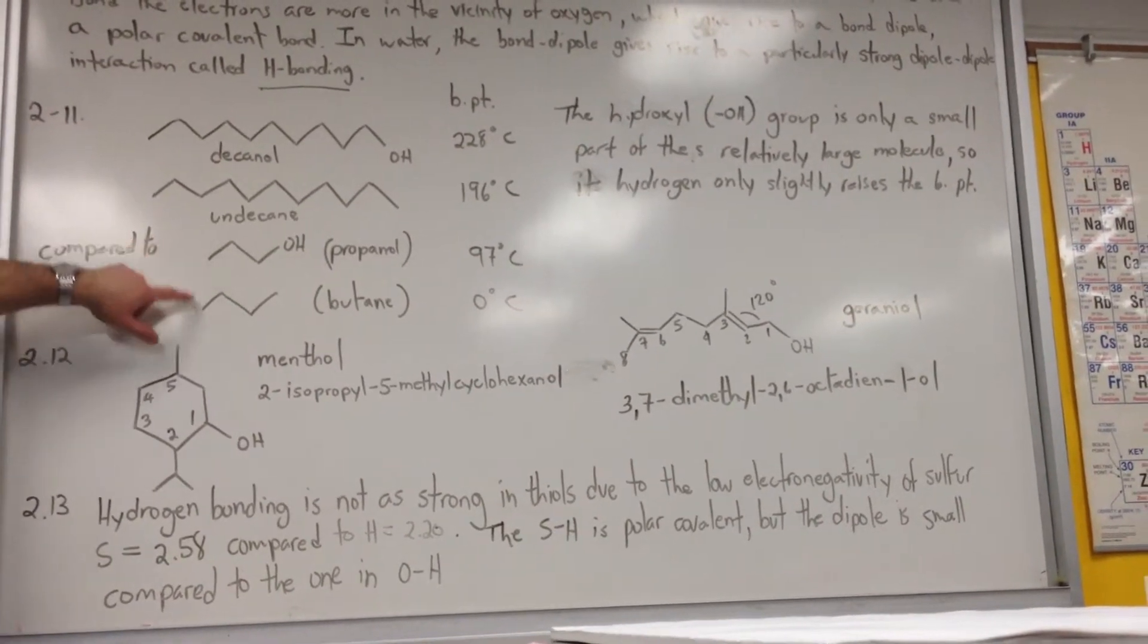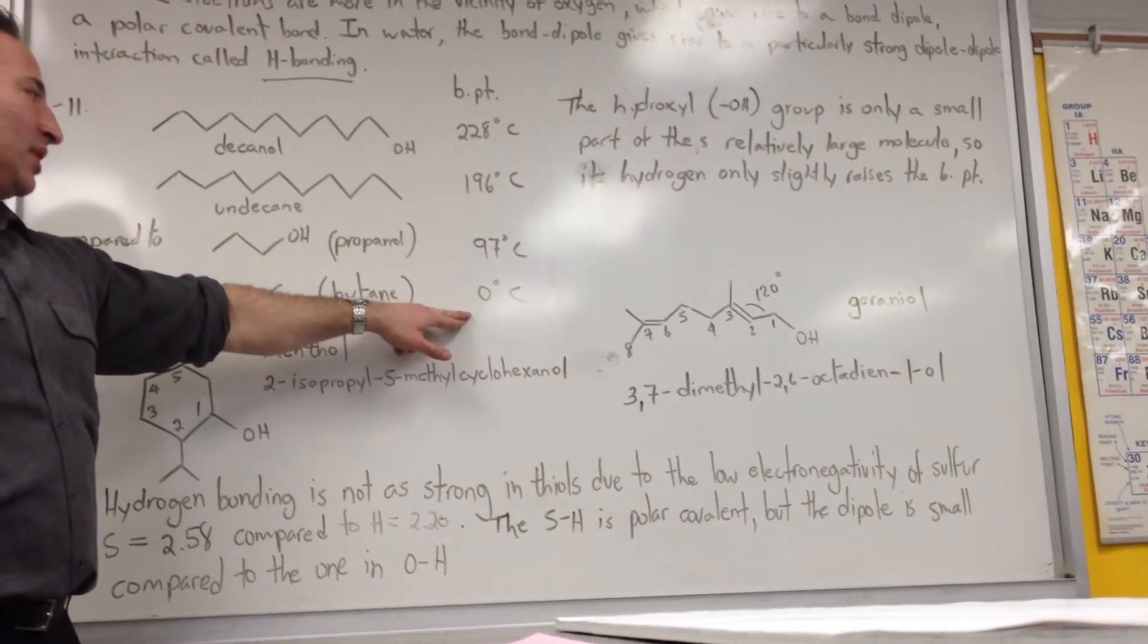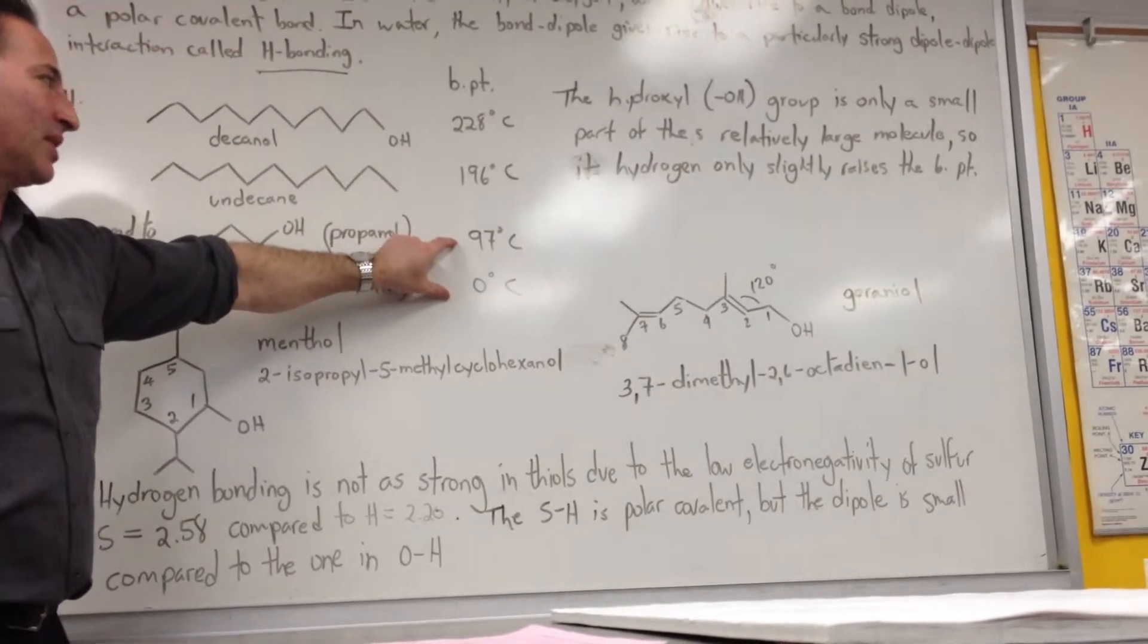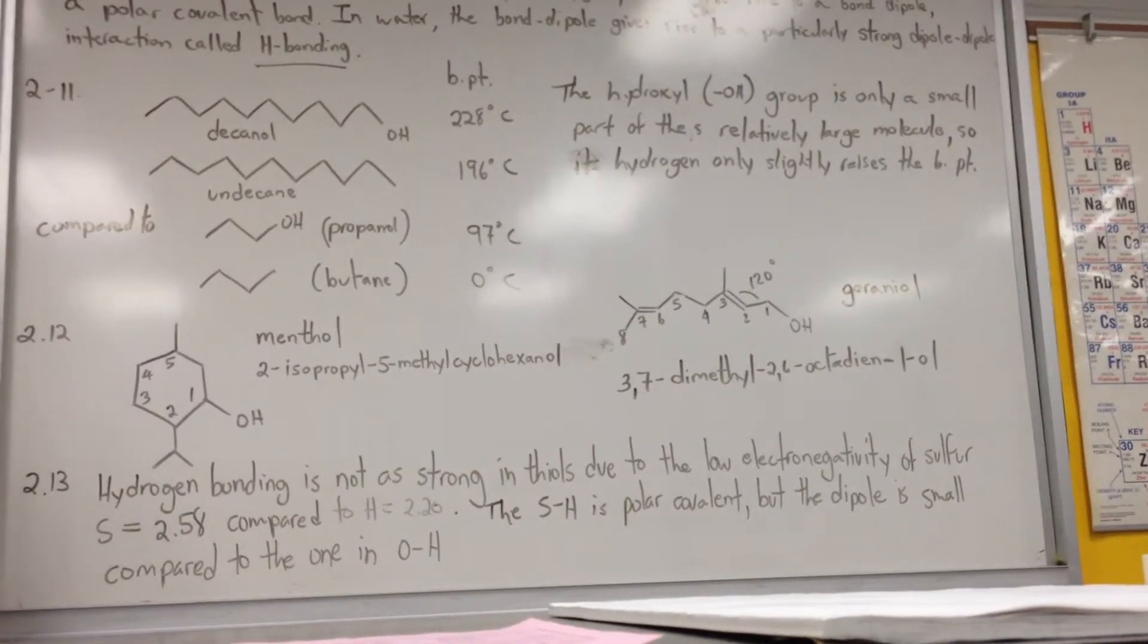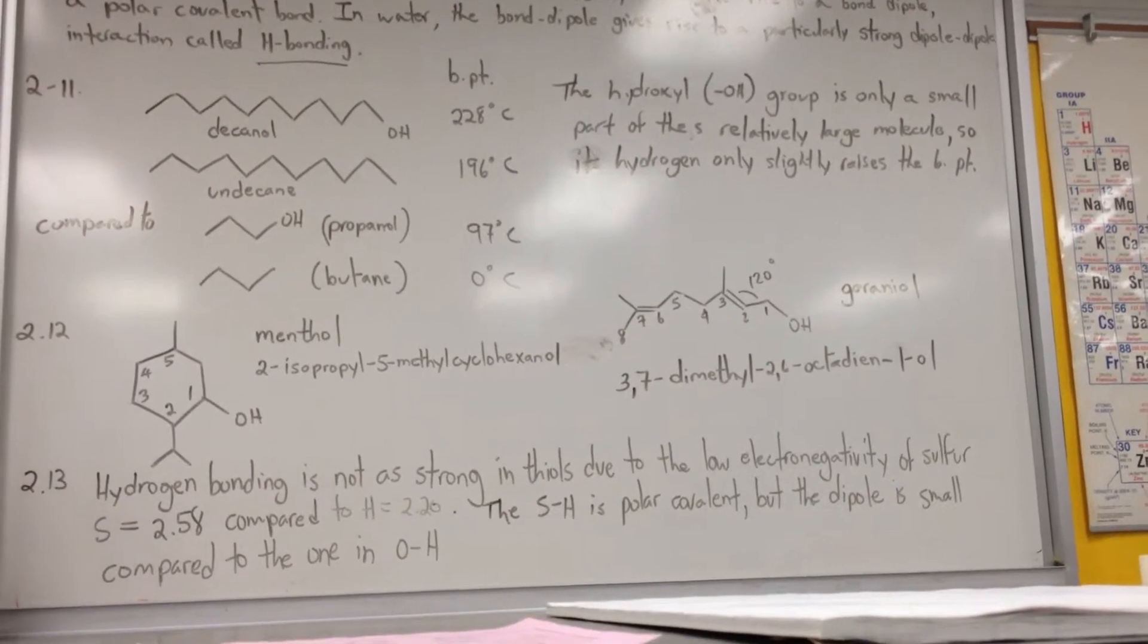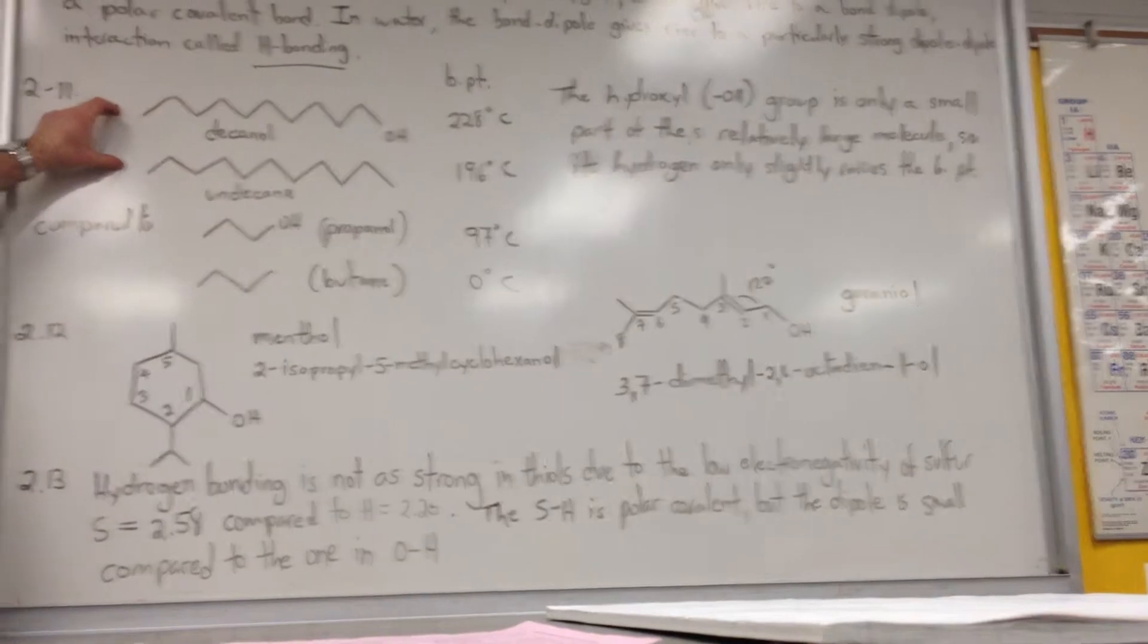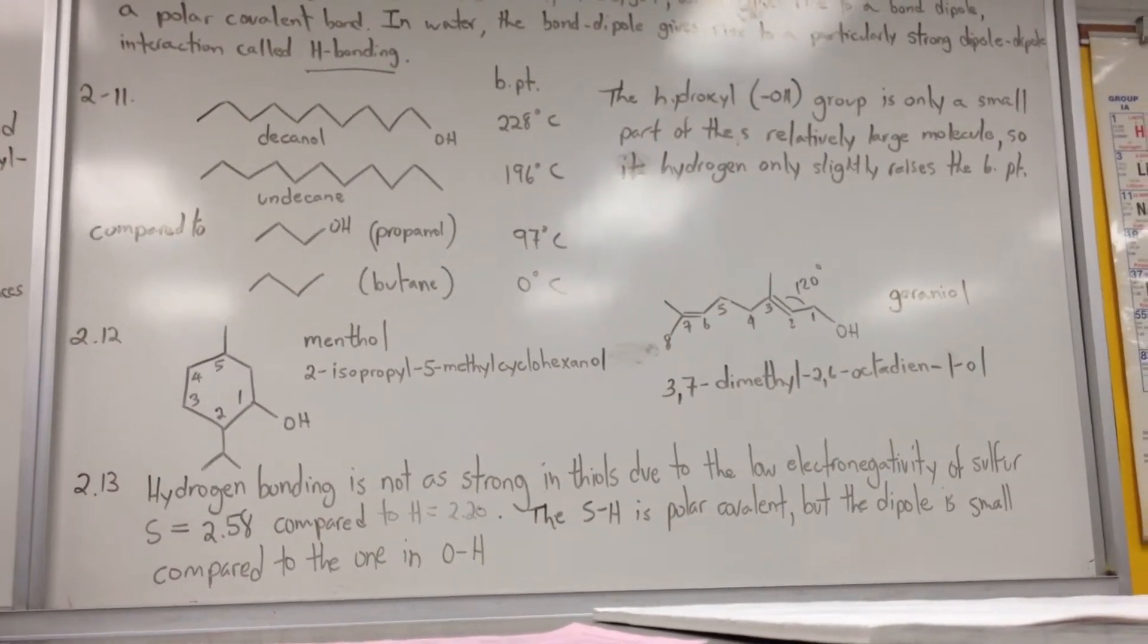And I compared that to propanol and butane. Propanol has a boiling point of 97, and butane has a boiling point of zero. So these are of similar molecular weight, but the difference is 100 degrees. Why? Because the hydroxyl group makes a bigger part of the molecule than that one. So the hydroxyl group is only a small part of these relatively large molecules, so its hydrogen bonding is only slightly going to raise the boiling point.